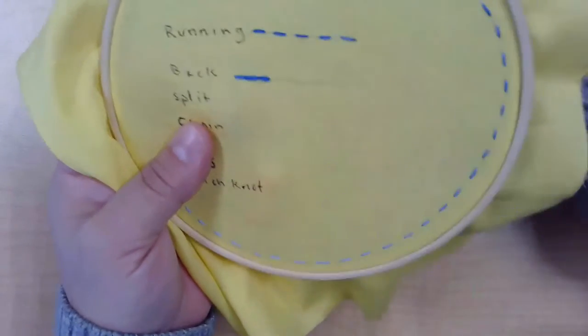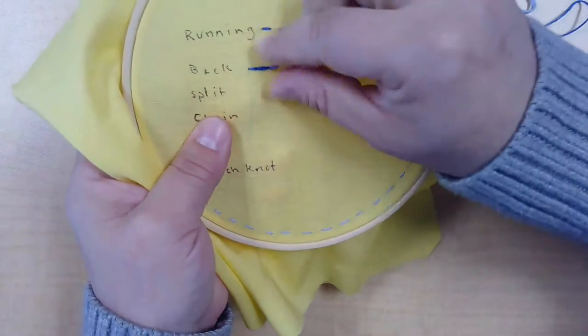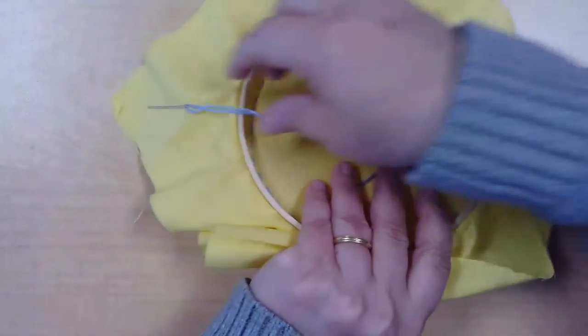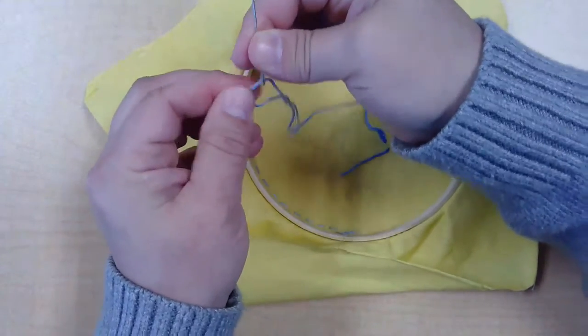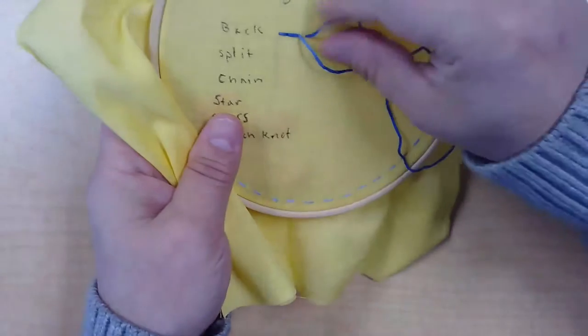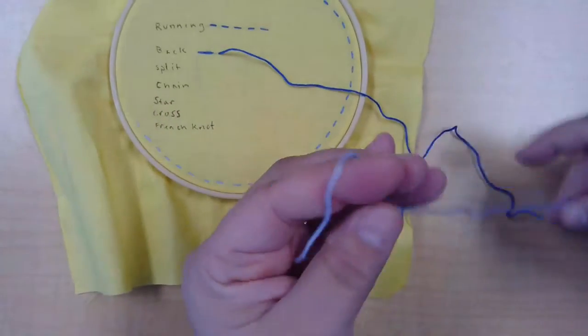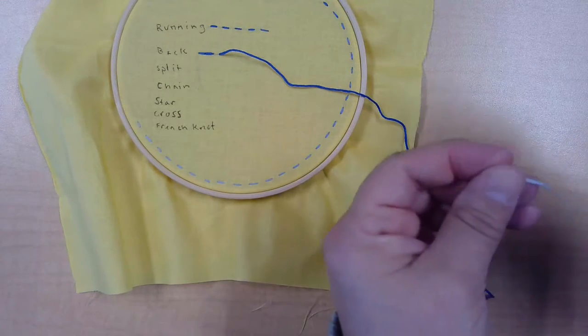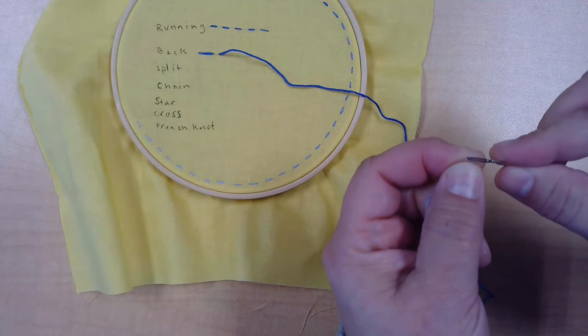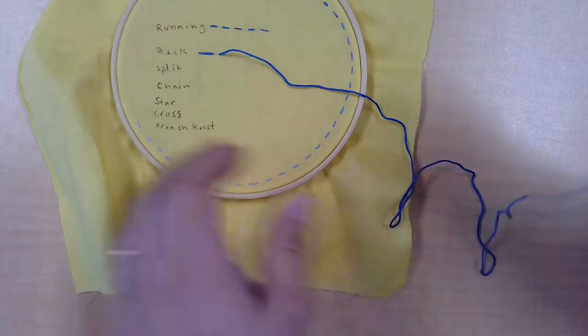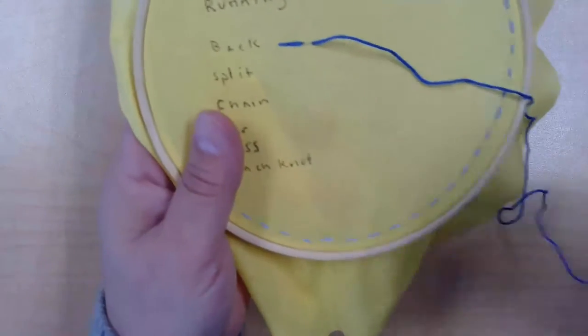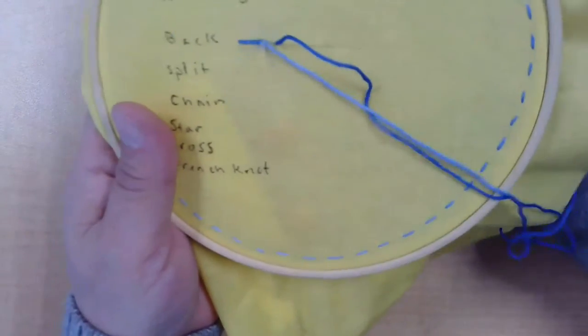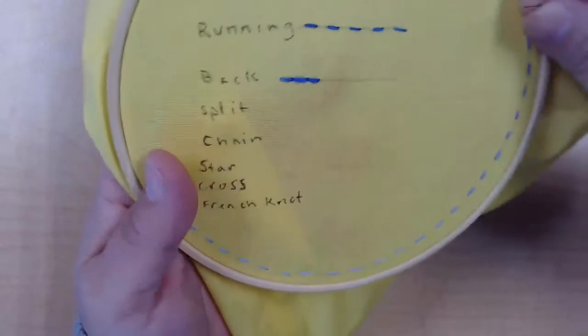If you don't like it, you can remove it. Like I think that one's a little short, so I unthreaded my needle and I pulled it out. That's the nice thing about not creating knots is that you're able to easily undo mistakes. Thread my needle again, and I'm going to redo that stitch. That's better.